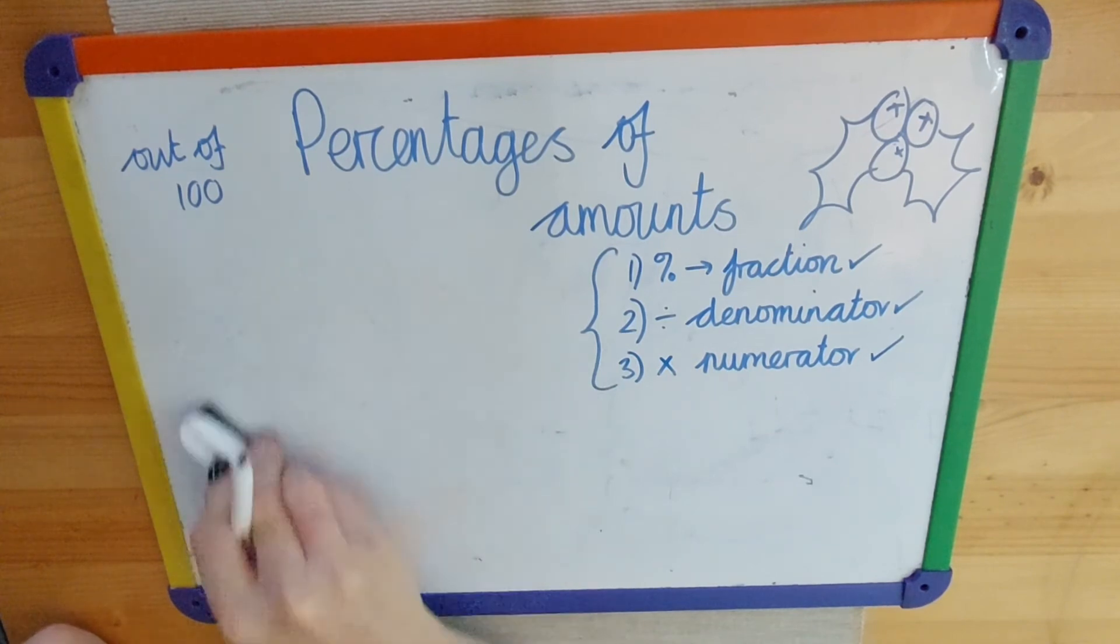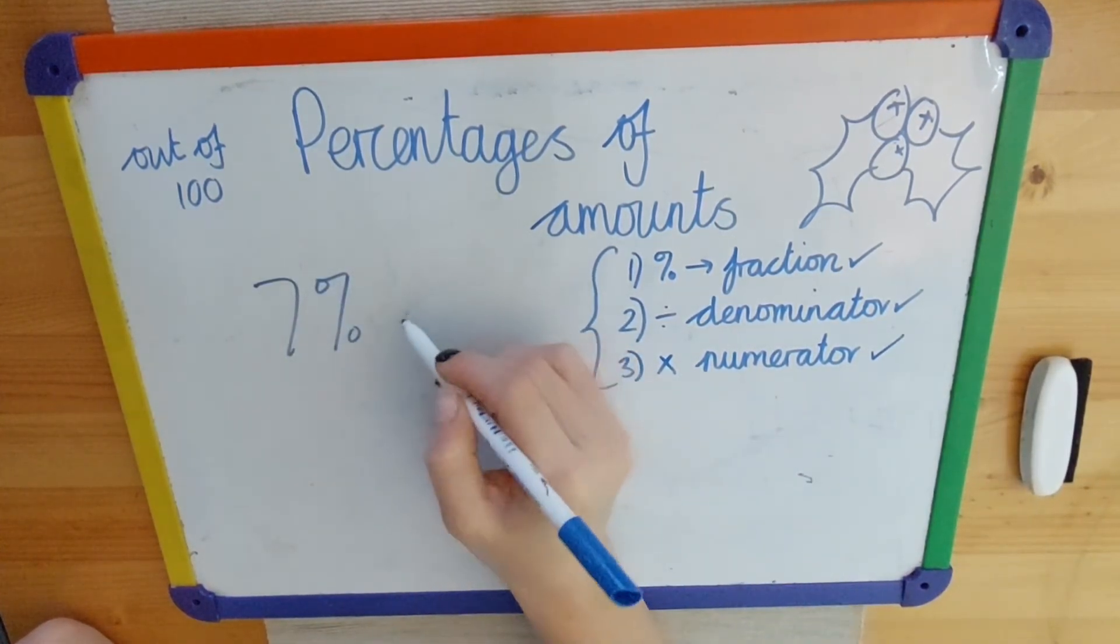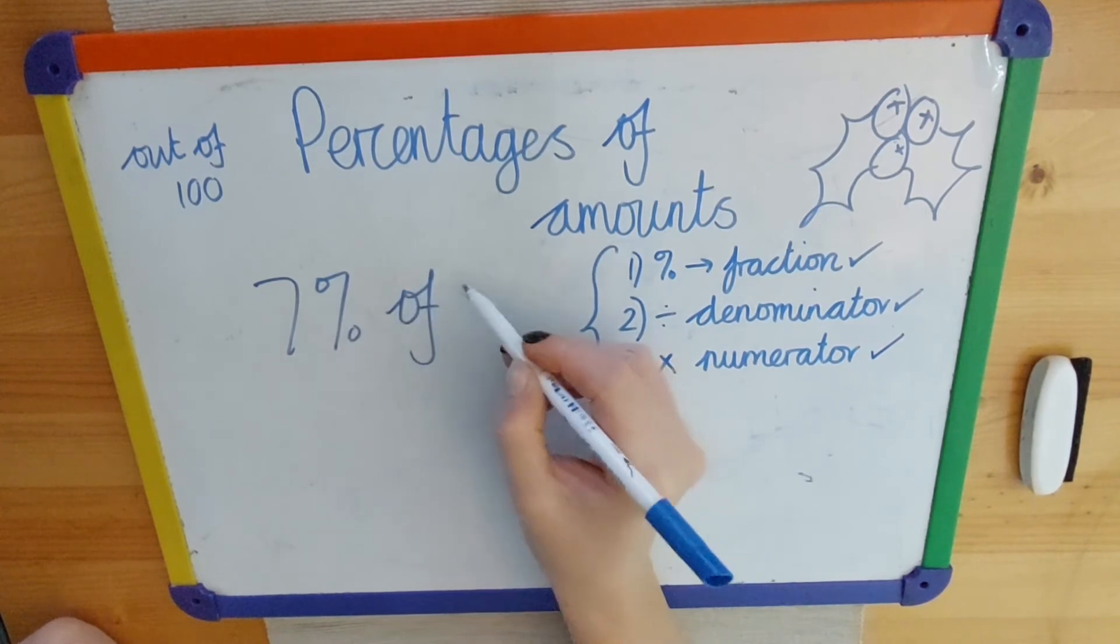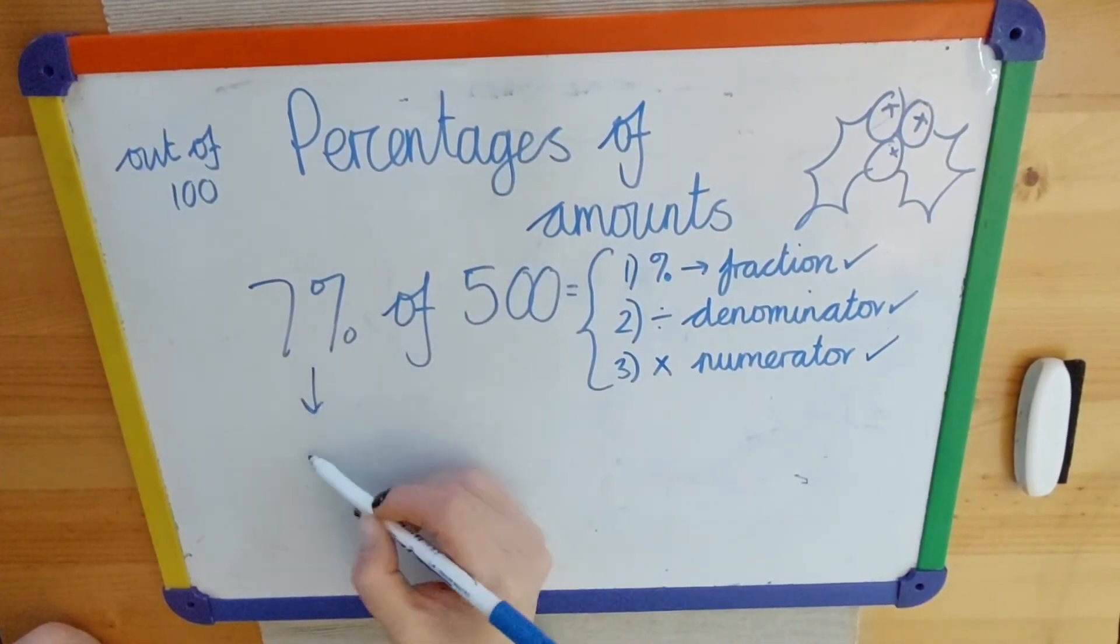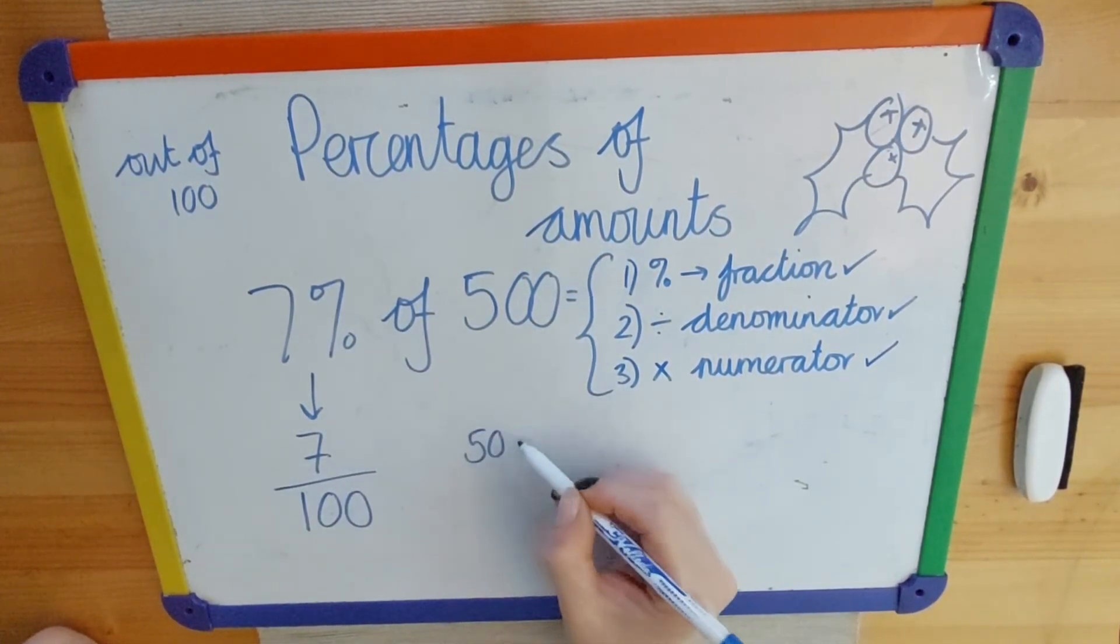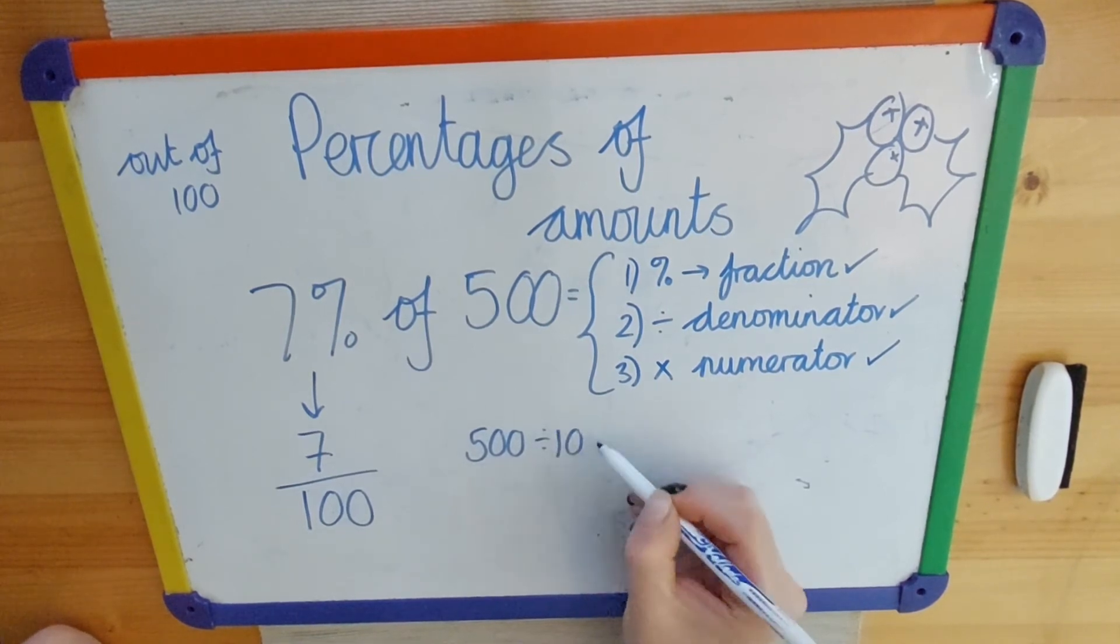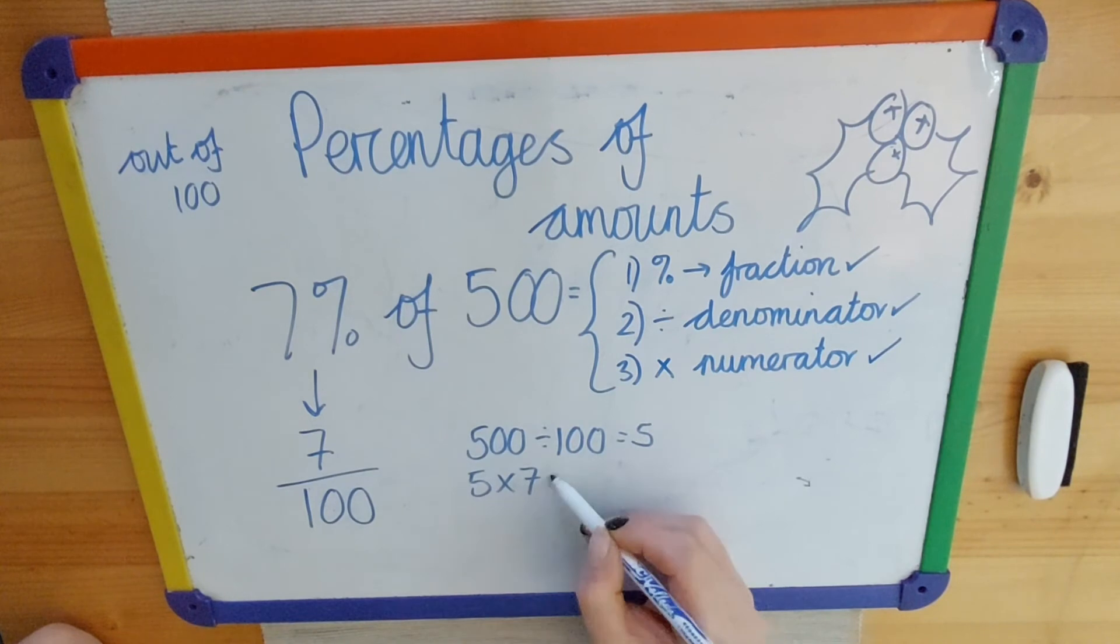And if I wanted to find 7% of 500, I would convert 7% into a fraction, and then I would divide by my denominator, so 500 divided by 100 is 5. 5 multiplied by 7, which gives me 35. My answer would be 35.